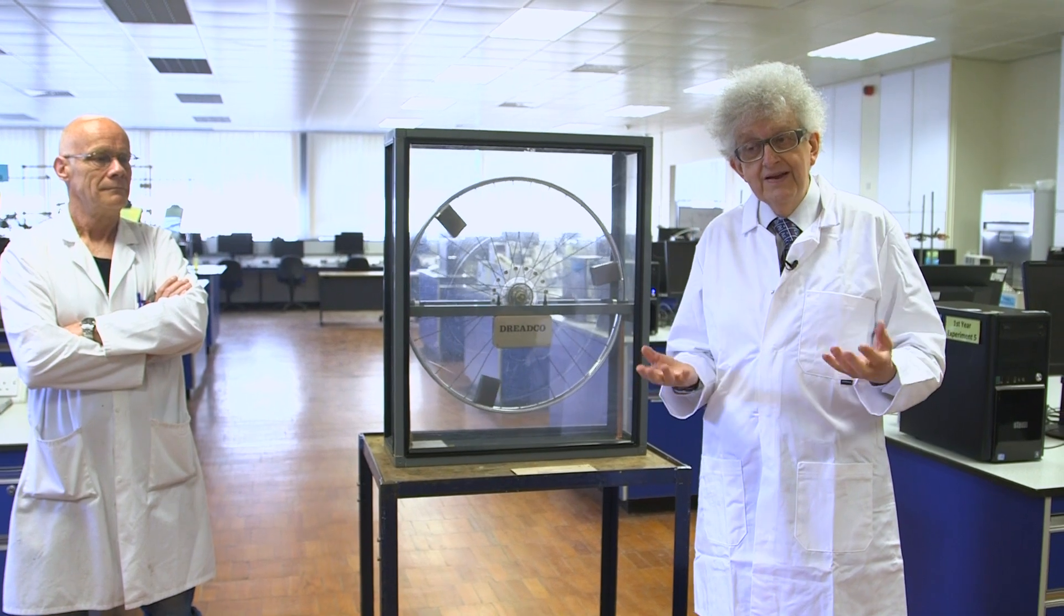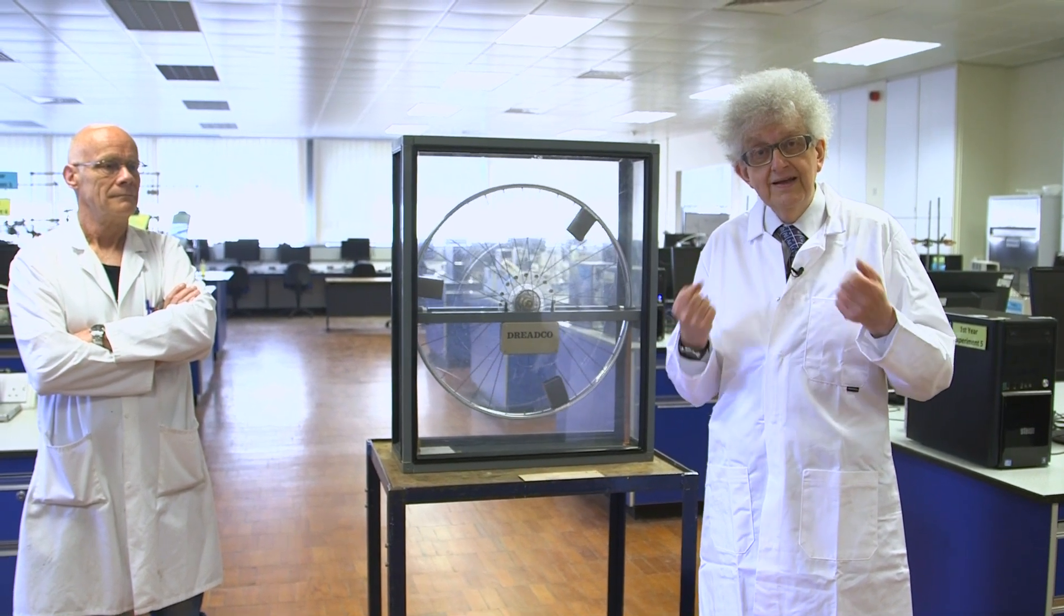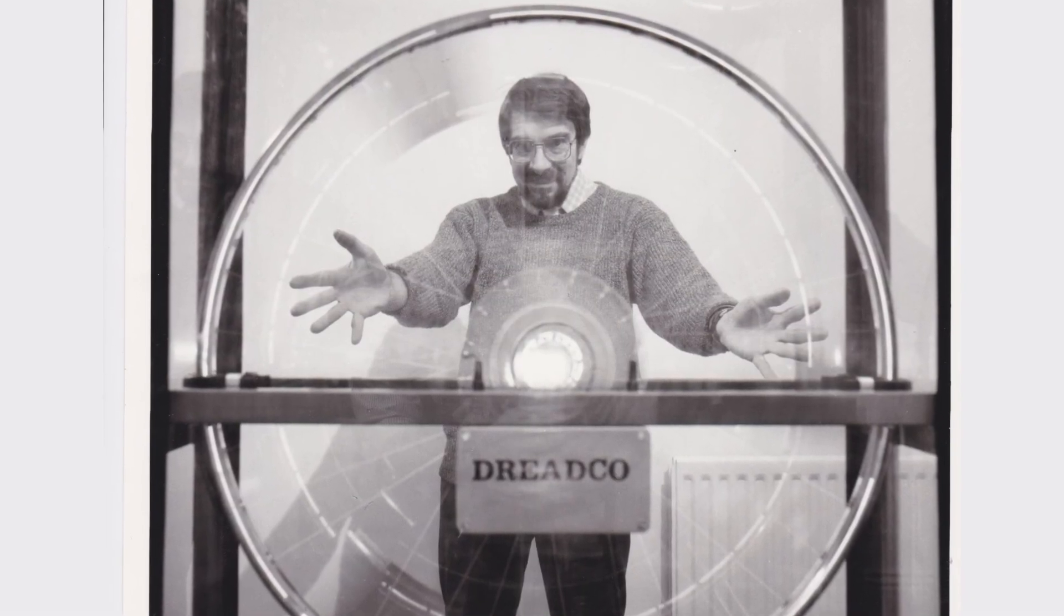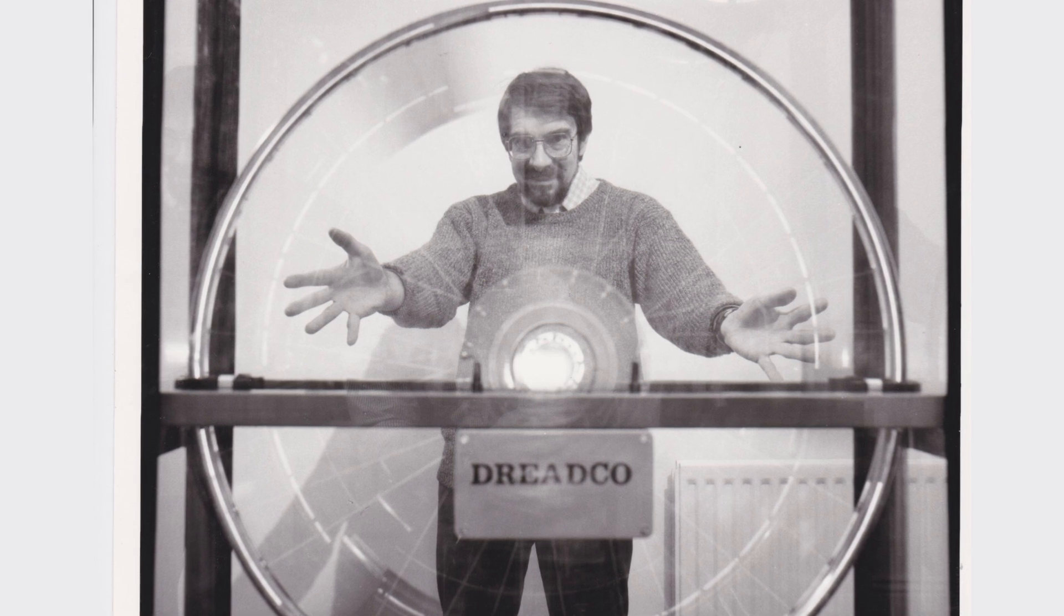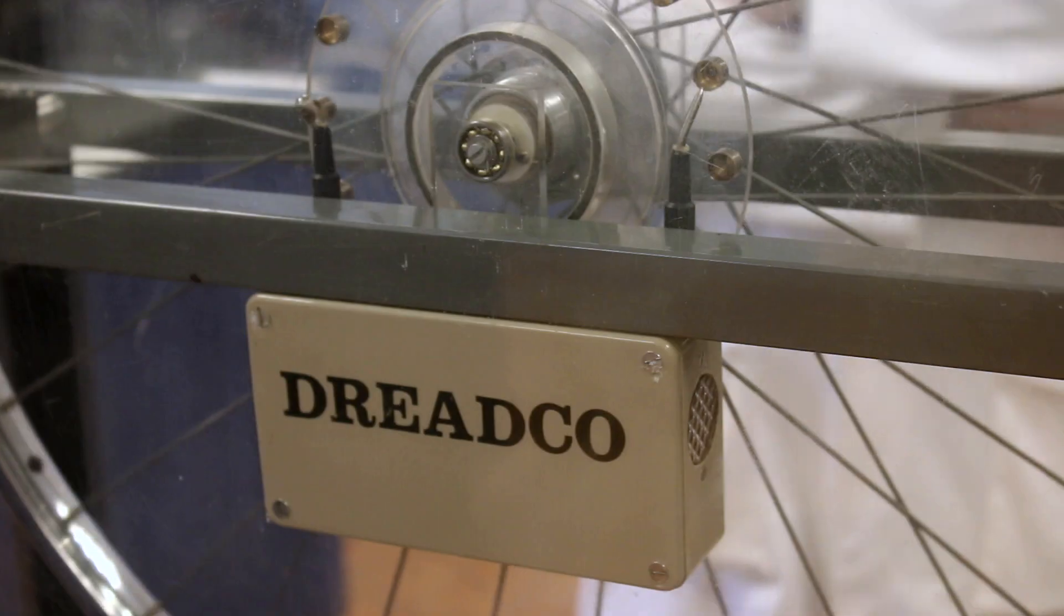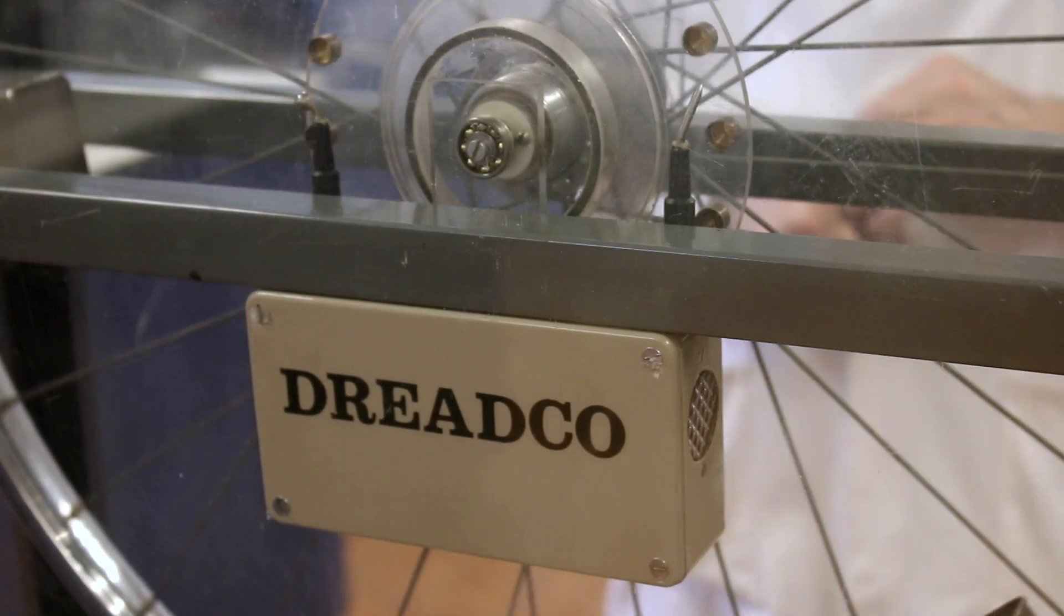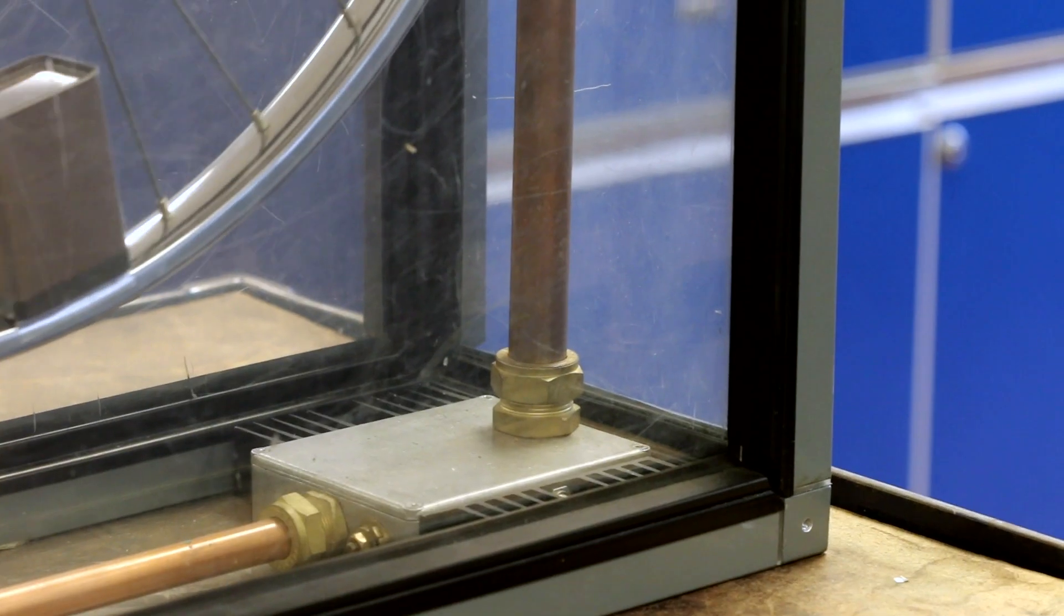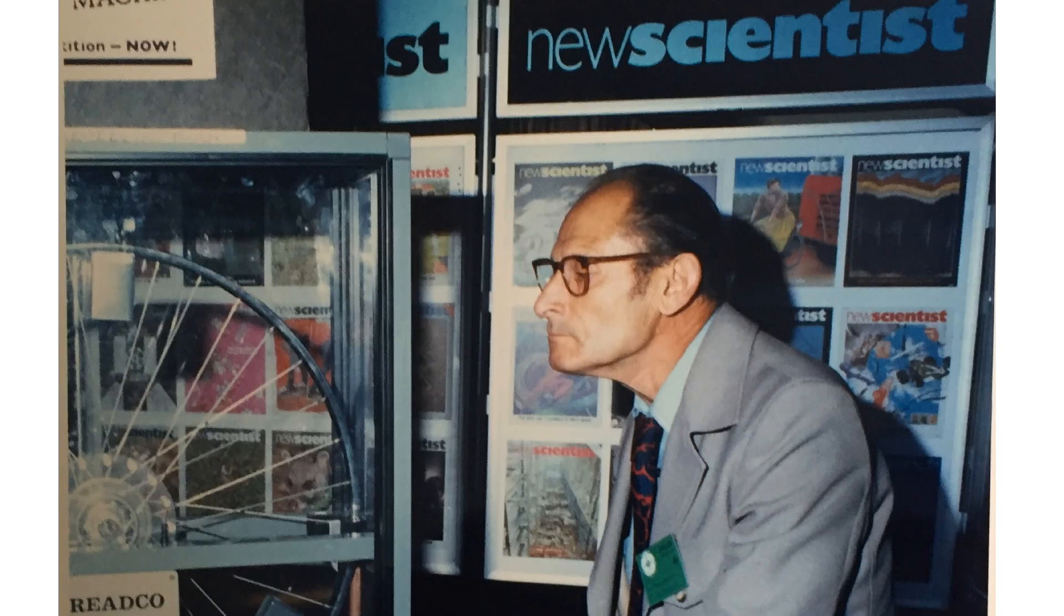This perpetual motion machine belongs to me. It was built by my friend David Jones, who died in July 2017, and in his will he bequeathed me this machine. He built it in 1980 or possibly 81 for an exhibition of the British Association, a science festival that takes place every year, and it was displayed on the stand of the magazine New Scientist.